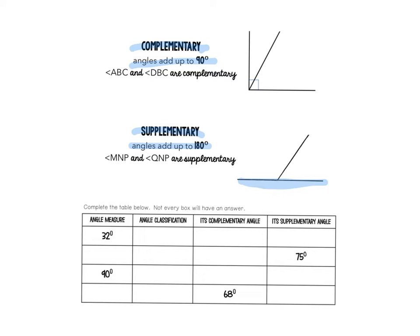Looking at that first angle, the angle measure is 32 degrees, and I'm going to classify that as acute, obtuse, or right. This would be an acute angle because it's smaller than 90 degrees. For its complement, since complementary angles are 90 degrees, we do 90 minus 32, which gives us 58. For its supplement, supplementary angles are 180, so 180 minus 32 gives us 148.